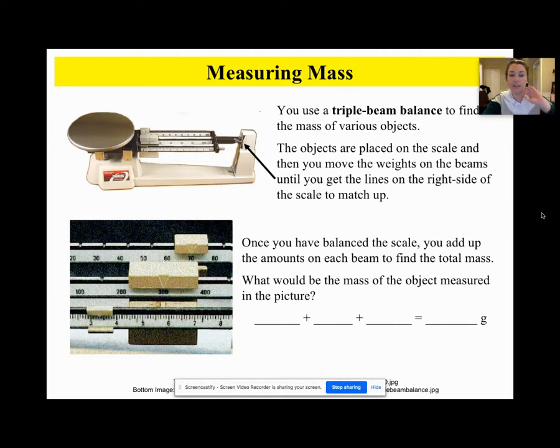Okay, hopefully you've done it. So you would add together the 70 plus the 300 plus - I know it's hard to see, but 3.3 - and you would end up getting 373.3 grams.